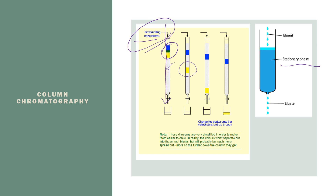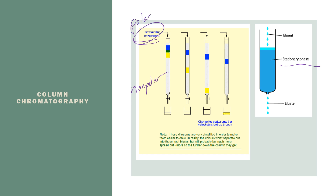For example, if the stationary phase is non-polar, then your solvent should be polar. As the polar solvent moves through, the most polar substance travels with it. In this case, the yellow will be more polar because it travels with the polar solvent, and you can collect that yellow substance at the bottom. This is unique compared to paper or thin layer chromatography because you can actually collect the substance out of the column rather than just analyze the components.